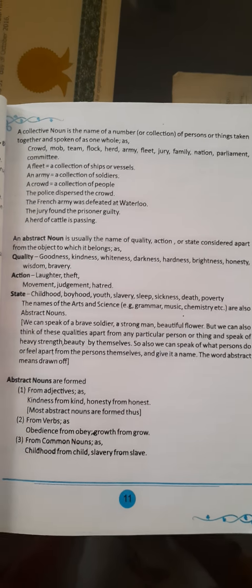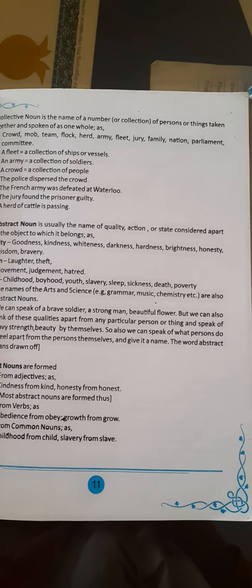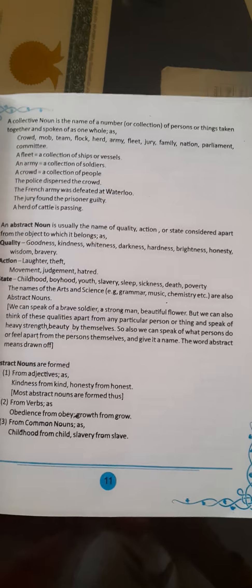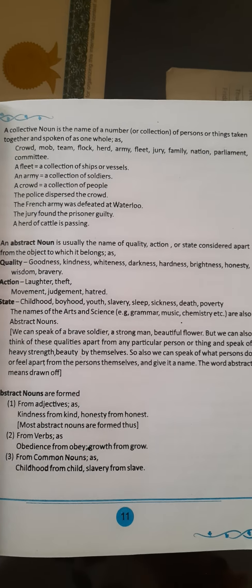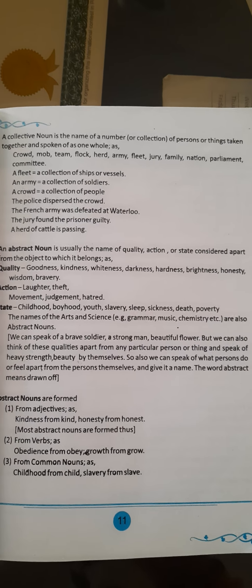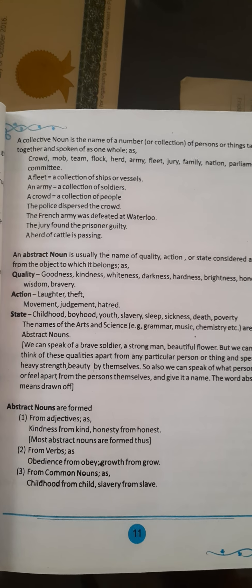An abstract noun is usually the name of a quality, action or state considered apart from the object to which it belongs. Quality examples: goodness, kindness, whiteness, darkness, hardness, brightness, honesty, wisdom, bravery.